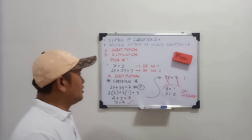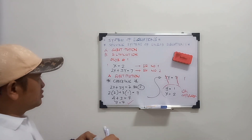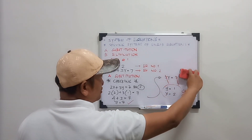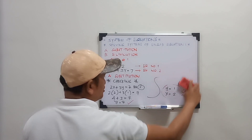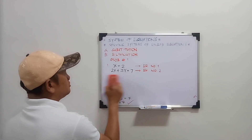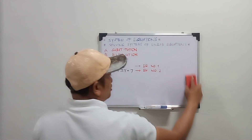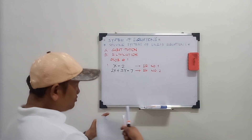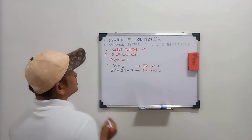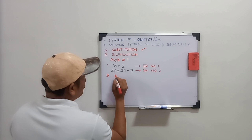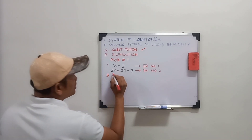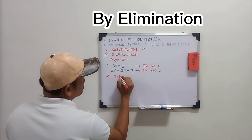Let's go to letter B, by elimination. So we are finished with substitution. Now the elimination method.